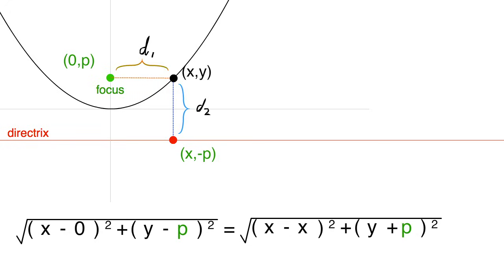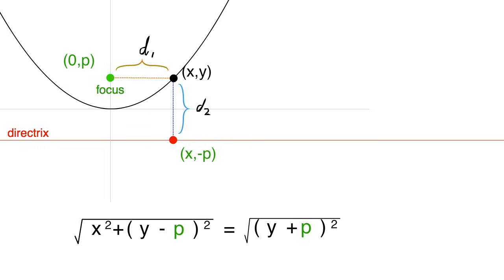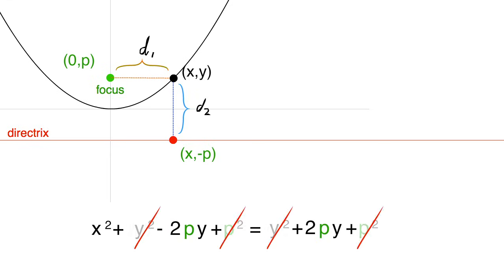What follows next is a series of algebra steps to rewrite the equation. So first, we'll simplify the equation, and then we'll square both sides to get rid of the square roots. Next, we expand the parentheses, cancel out like terms, combine like terms. Finally, to solve for y, we'll divide both sides by 4p.